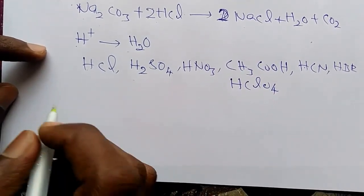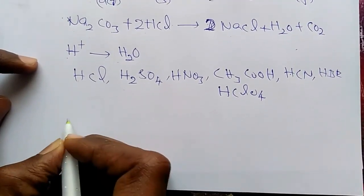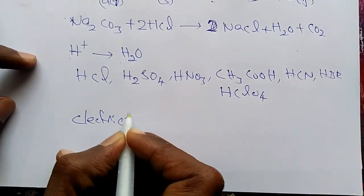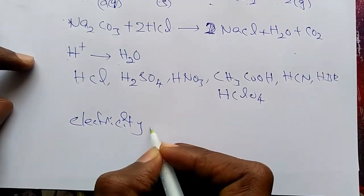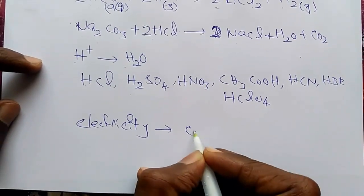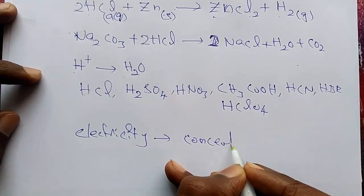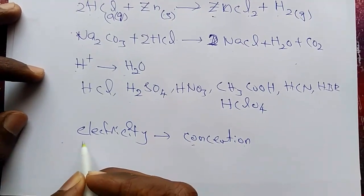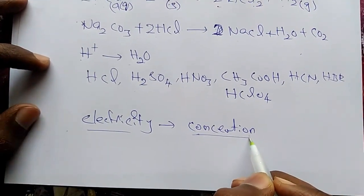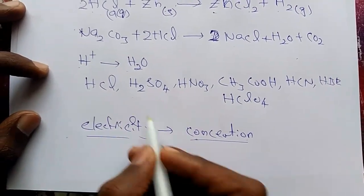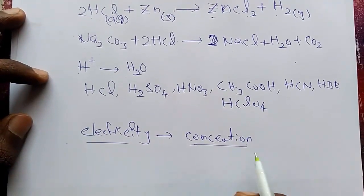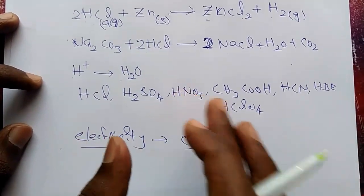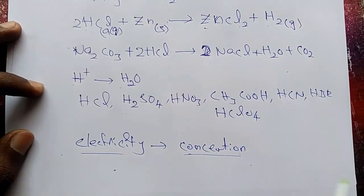So next major property for acid: it can conduct electricity. Due to the ions generated, current can pass from anode to cathode. This is the conductivity property of acids.